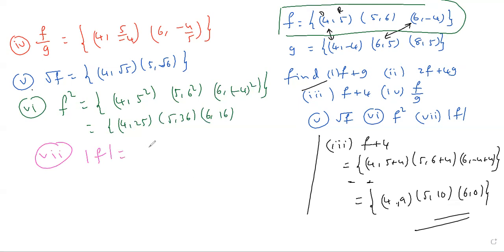Mod f. Apply mod to second element, second element is the range of the function. (4, mod 5), (5, mod 6), (6, mod -4). Mod -4 result is plus 4. Answer: (4,5), (5,6), (6,4). Modulus 5 is 5. The mod symbol, result is positive.